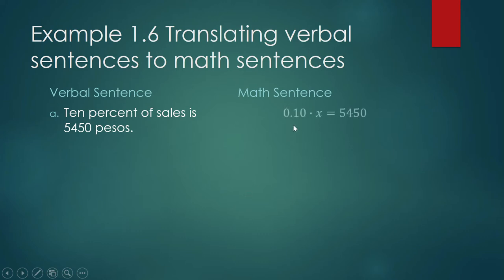Okay, so 0.10 times x. You can come up with your own variable for the sales. 0.10 times x is equal to 5,450.